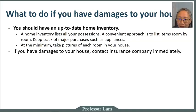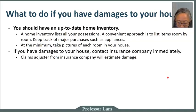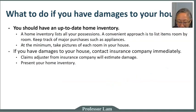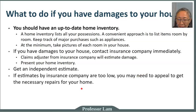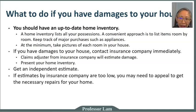If you do have damages to your house, contact your insurance company right away. They will send out a claim adjuster to estimate the damage, and at that time you can present your home inventory so they know exactly what was damaged. It's also a good idea to get an independent estimate — particularly for structural damage, contact a contractor for their repair estimate. If the insurance company's estimate differs significantly from the contractor's, you may need to appeal to get the repair you need.